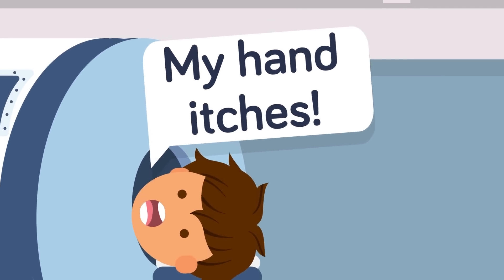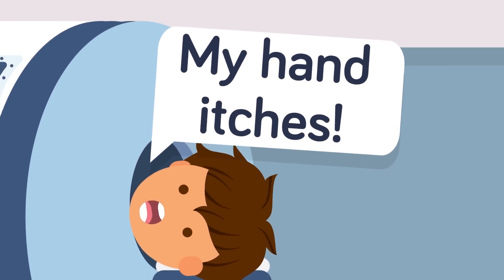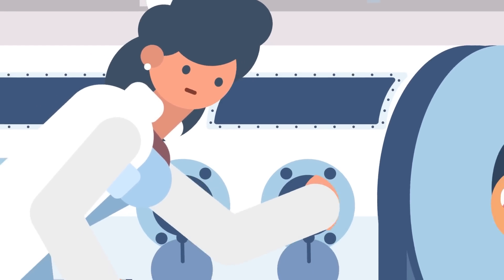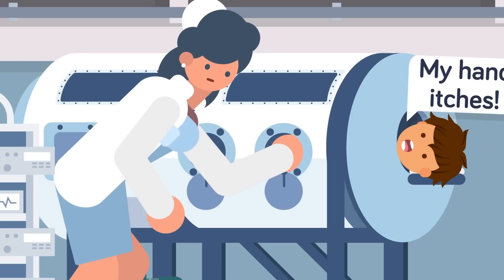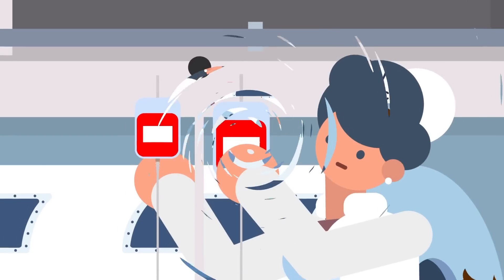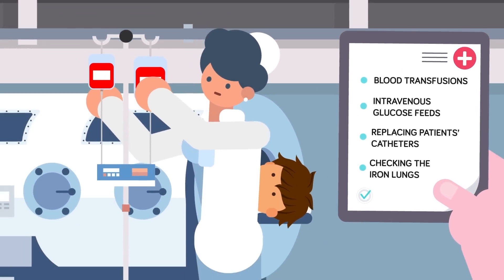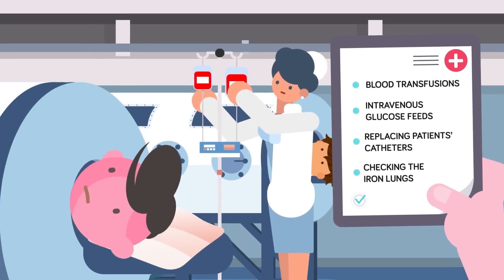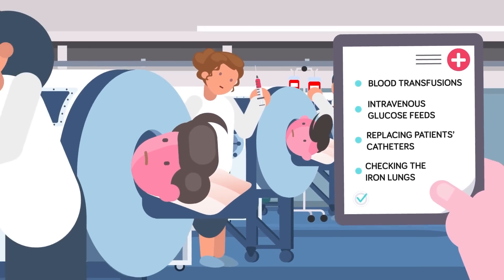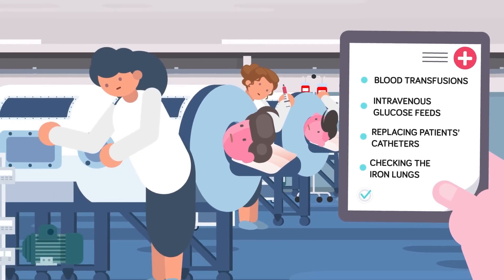Having one's entire body from the neck down trapped within a breathing machine meant none of the patients could use their hands, and many were so weakened by their polio symptoms it made movement next to impossible. As a result, doctors and nurses had to work around the clock to provide blood transfusions, intravenous glucose feeds, inserting and replacing patients' catheters, and endlessly checking that the iron lungs were working as intended.